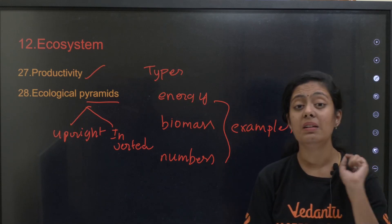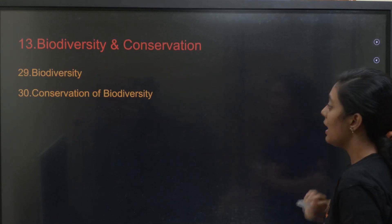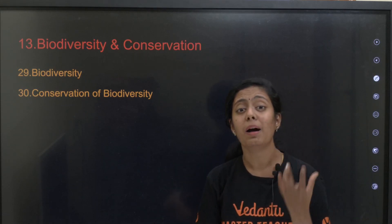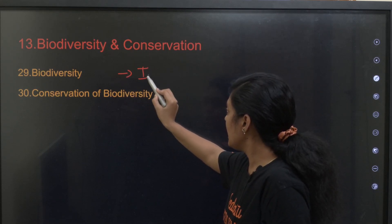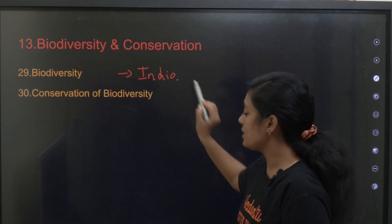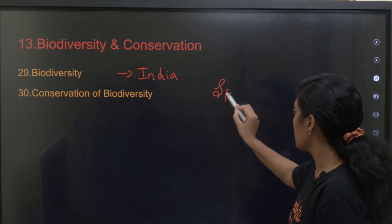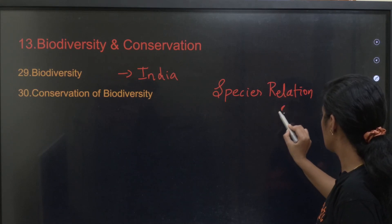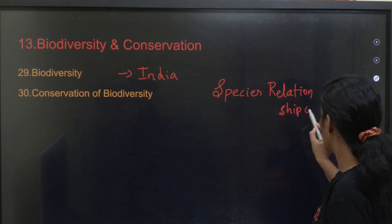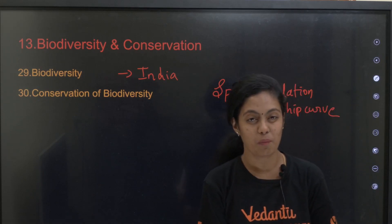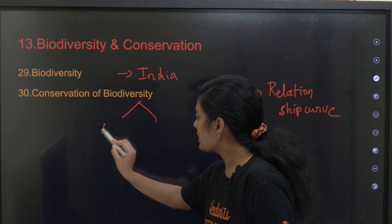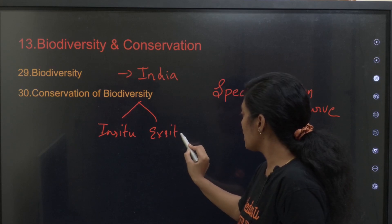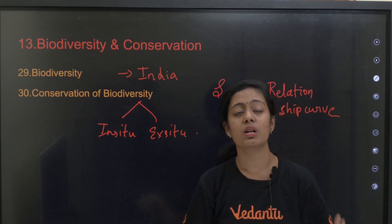The last topic is biodiversity and conservation. You need to know what biodiversity is and its status in India. Understand the species-area relationship curve — you need to be thorough with that. For conservation of biodiversity, there are two types: in-situ conservation and ex-situ conservation.